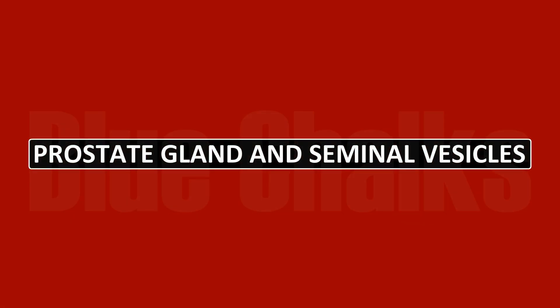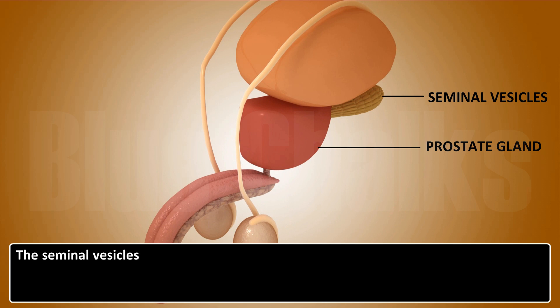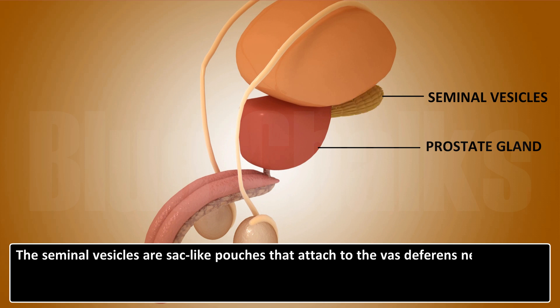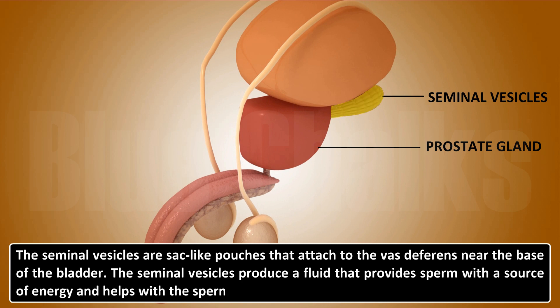Two glands found in the male reproductive system are the prostate gland and seminal vesicles. The seminal vesicles are sac-like pouches that attach to the vas deferens near the base of the bladder. The seminal vesicles produce a fluid that provides sperm with a source of energy and helps with the sperm's motility. This fluid is called semen.